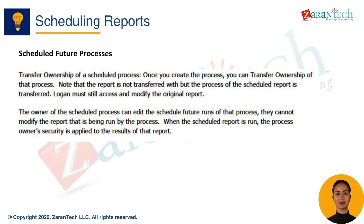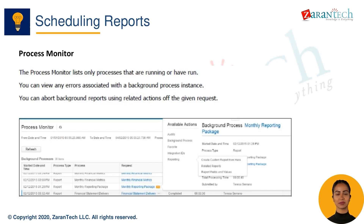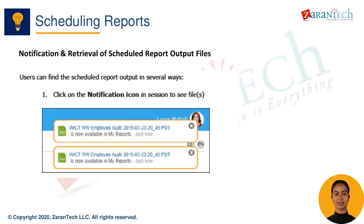The Process Monitor shows all processes run in your Workday tenant, including scheduled reports. You can filter processes by type, such as reports, or view processes for a specific time period.